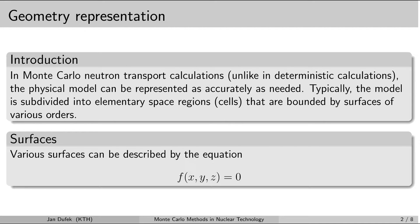In Monte Carlo simulations the geometry can be represented as accurately as needed. This is because the geometry can be divided into elementary space regions, so called cells, which can be bounded by different surfaces. The Monte Carlo code does not pose any limitations to the level of accuracy with which we want to create the model of the geometry.